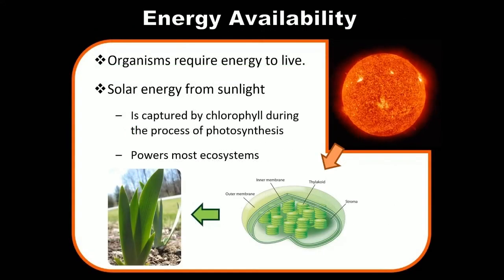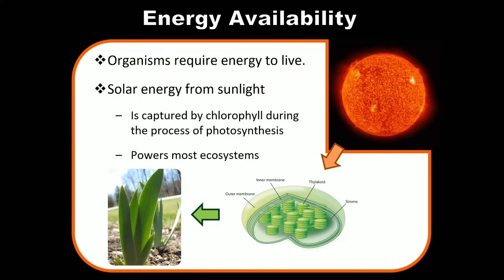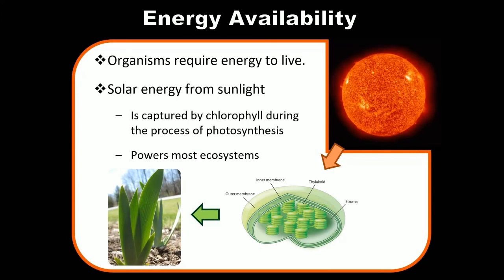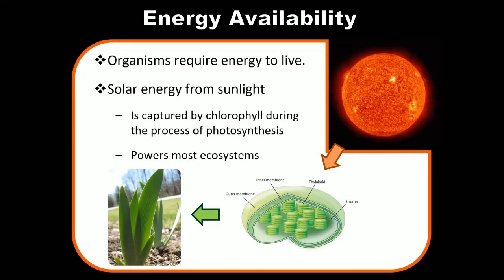One very important abiotic component of the environment is the energy source. Organisms require energy to live, and ultimately the energy source for all ecosystems on the planet — with the singular exception of hydrothermal vents deep under the ocean — is the sun. That's very easy to see in plants, which are autotrophs. Autotrophs are self-feeders, meaning they take energy from their non-living environment and convert it directly into chemical energy.